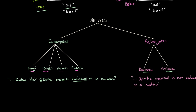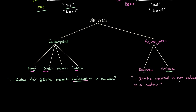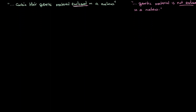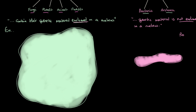We immediately have a separation between these two concepts: an enclosed nucleus for eukaryotic cells, while prokaryotic cells — bacteria and archaea — do not have their genetic material enclosed that way. Let me illustrate this simply with two cell membranes: on the left, eukaryotic cells; on the right, prokaryotic cells. Both have a cell membrane and cytoplasm, so at the moment they look somewhat similar.